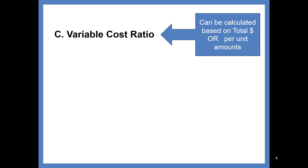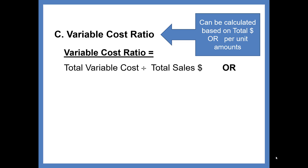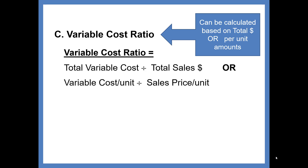The Variable Cost Ratio can also be calculated in total or per unit. The calculation is Total Variable Cost over Total Sales dollars, or Variable Cost per Unit divided by the Sales price per unit. You'll get a percentage, and it is important to note that the Contribution Margin Ratio and the Variable Cost Ratio will make up 100% of your sales — they are mathematical complements.